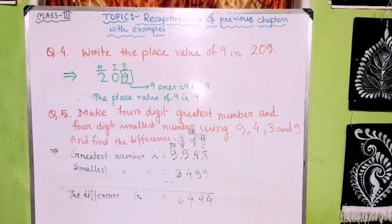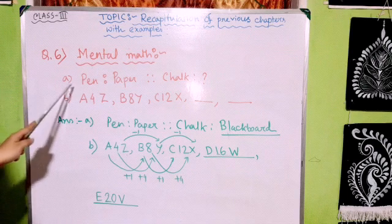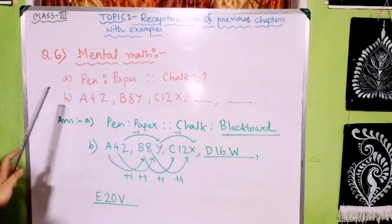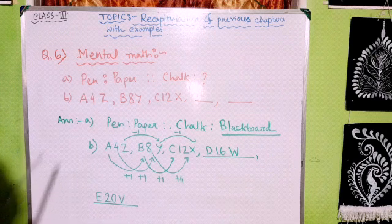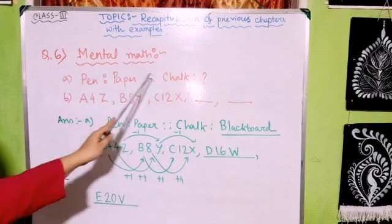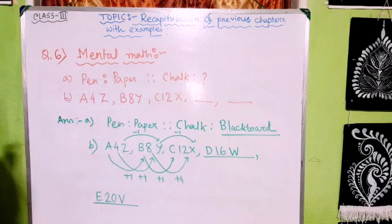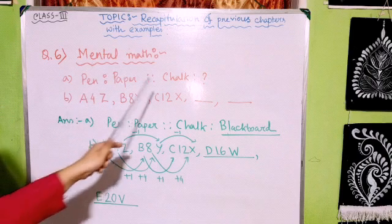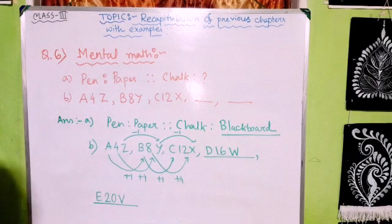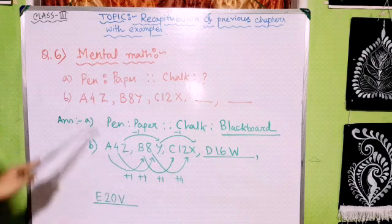Now we will solve two mental maths questions. The first is an analogy question. 'Pain is to paper, chalk is to ___.' We use pain on paper for writing; similarly, we use chalk to write on a blackboard. So the answer is blackboard.